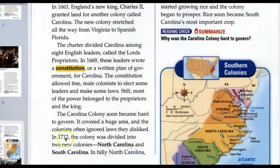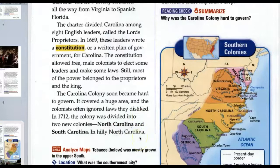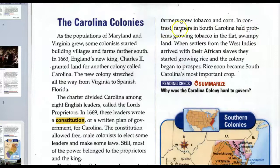In hilly North Carolina, farmers grew tobacco and corn. In contrast, farmers in South Carolina had problems growing tobacco in the flat, swampy land. When settlers from the West Indies arrived with their African slaves, they started growing rice and the colony began to prosper. Rice soon became South Carolina's most important crop.